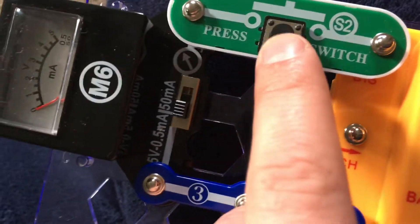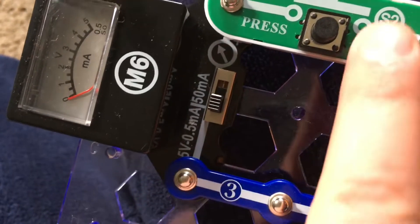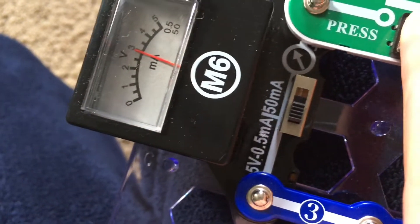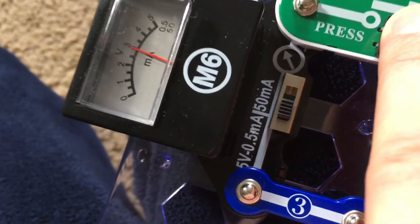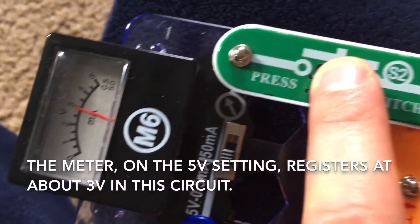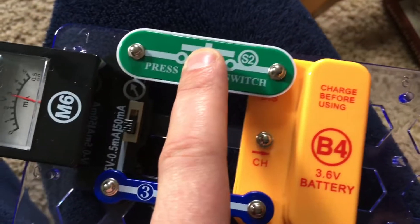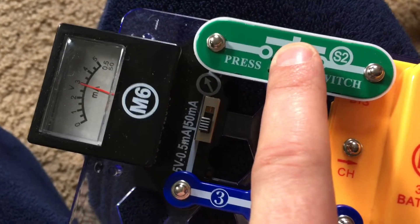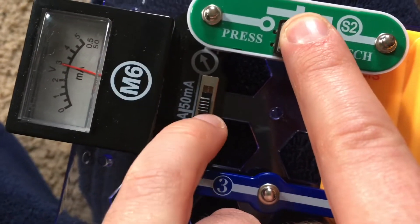When I hold down the press switch, the meter will reach 3 volts. It's on the 5 volt setting. The electricity flowing through the battery is now being measured in voltage.